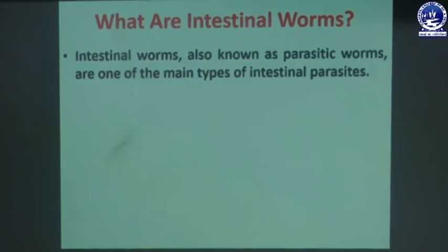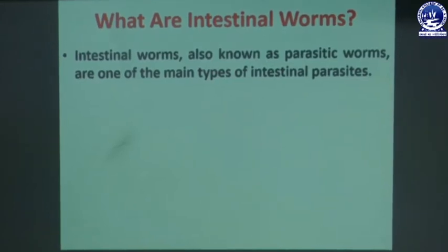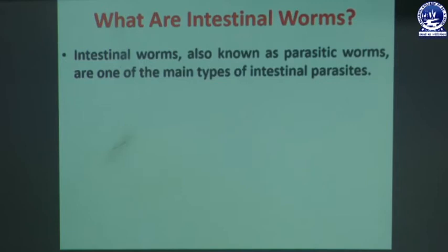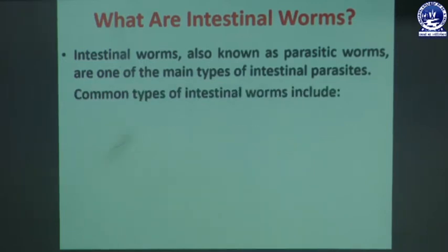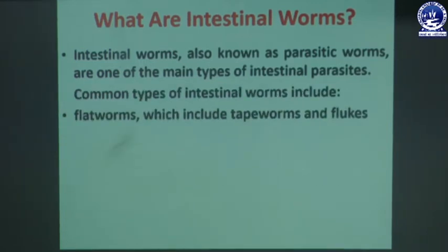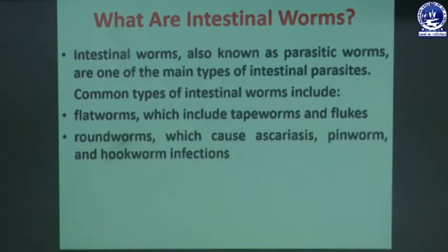Intestinal worms, also known as parasitic worms, are one of the main types of intestinal parasites. Common types include flatworms, which include tapeworms and flukes, and roundworms, which cause ascariasis, pinworm, and hookworm infections.